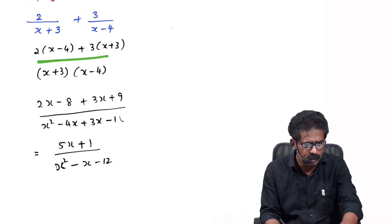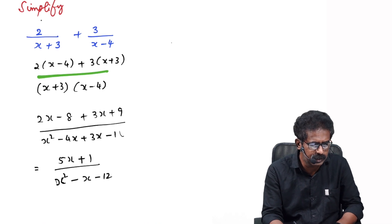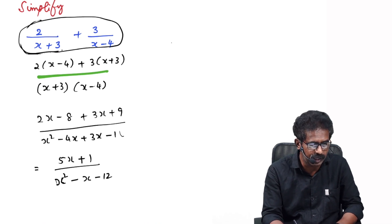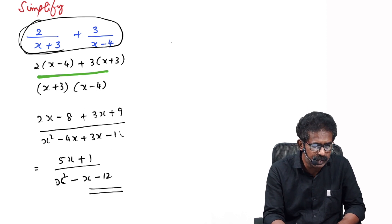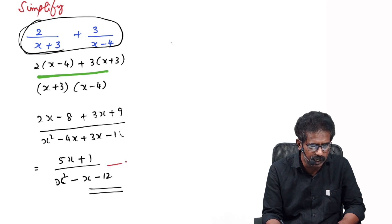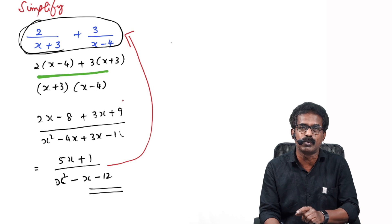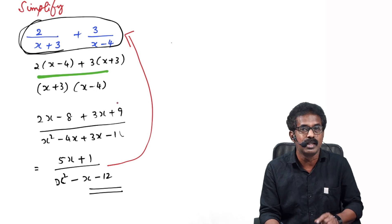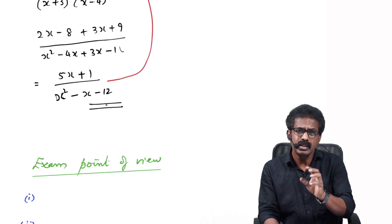Now listen — you know how to simplify from two fractions to one. But if the simplified expression 5x+1 over x²−x−12 is given, how do you find the original form? That reverse process is what we call resolving into partial fractions.